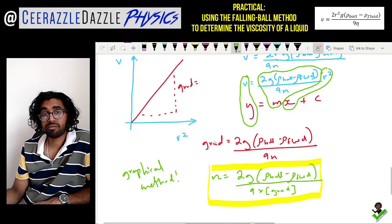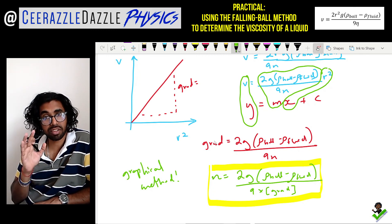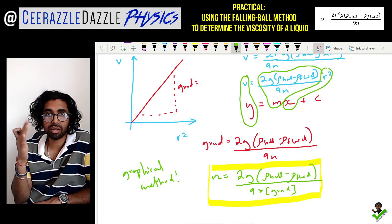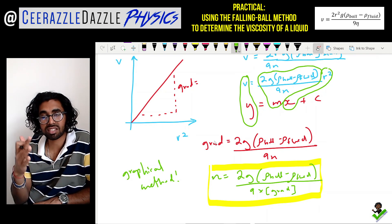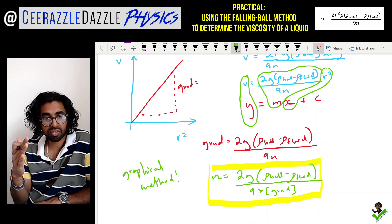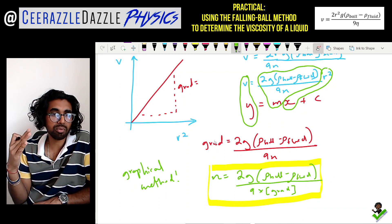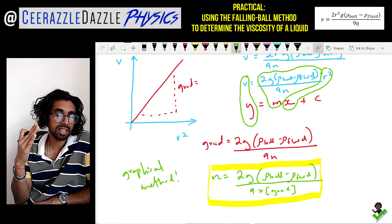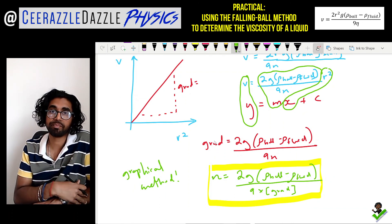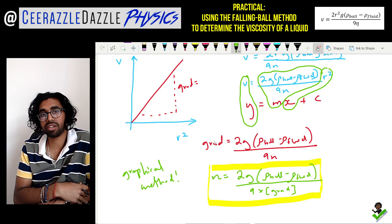That's it for another session of Dazzle Physics. It's very difficult and challenging, but make sure you watch it and make your own notes — no point just watching, you've got to do it yourself. Write it out, make sure you understand the physics and the practical, relating the equation of the line to the physics equation, and how to use your graph to determine the viscosity.